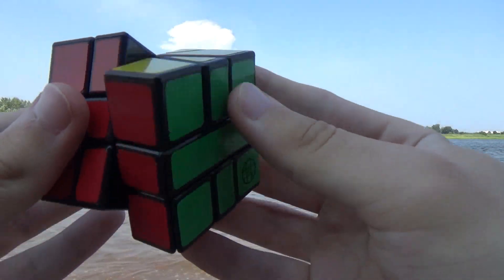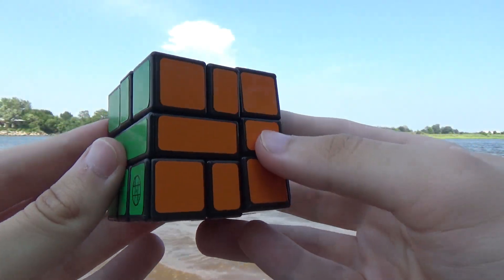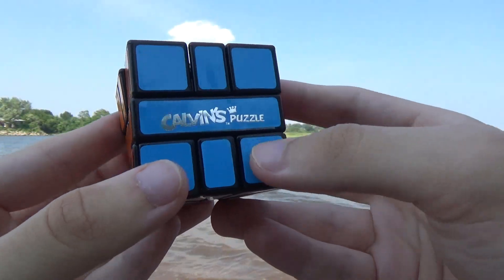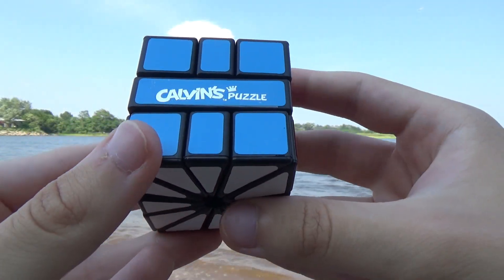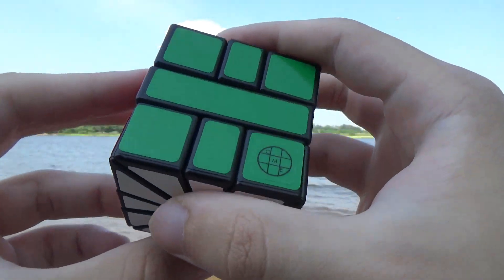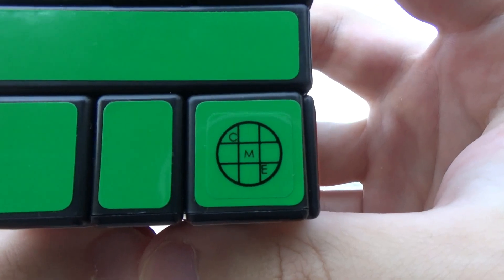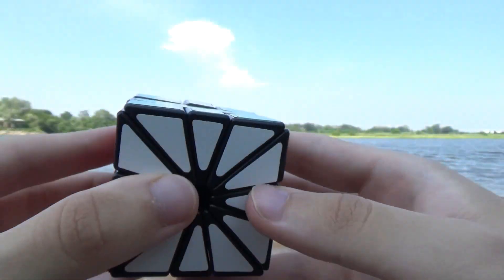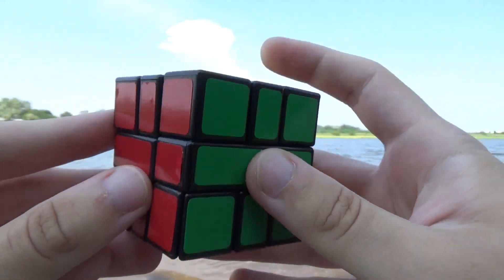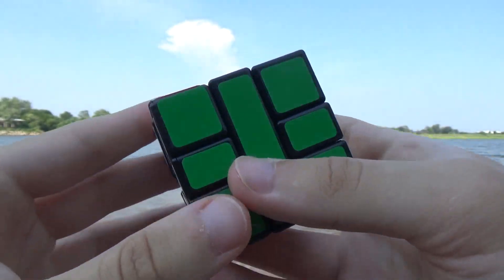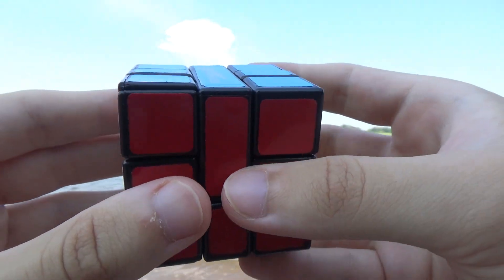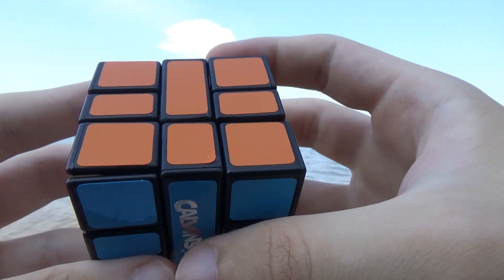This is the Square-3 Plus. It's a new puzzle being mass-produced by Calvin Fan based on the original that I made myself earlier this year. It has one layer from a Square-1, one layer from a Square-2, and a central layer that is the same as the one on all regular square-type puzzles.